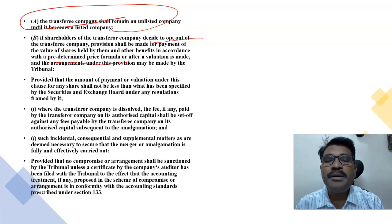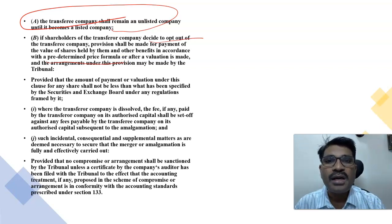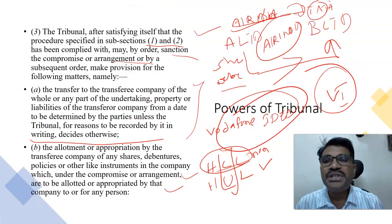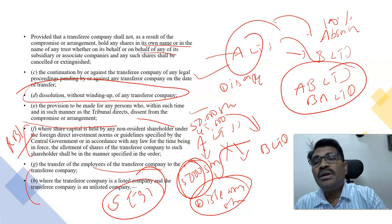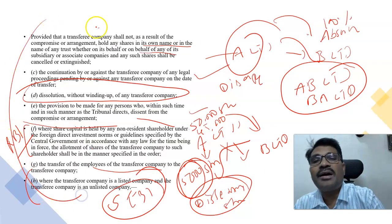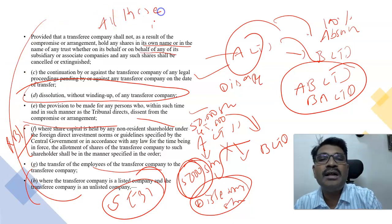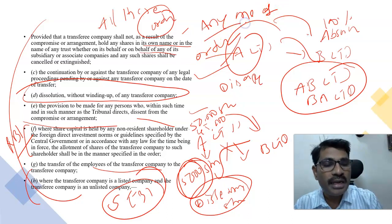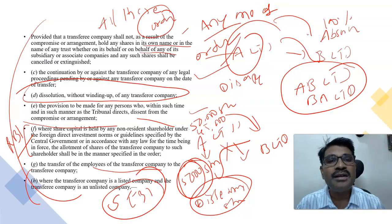If shareholders of the transferor company decide to opt out of the transferee company, provisions shall be made for payment of the value of shares held by them and other benefits in accordance with a pre-determined price formula or after a valuation is made. The tribunal may make other arrangements as well. Basically, under Section 232, the tribunal has the power to pass all these orders or any one of them.